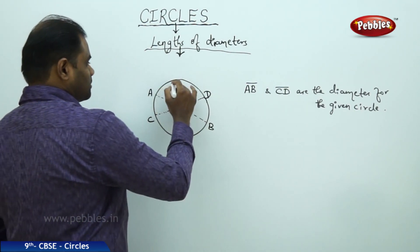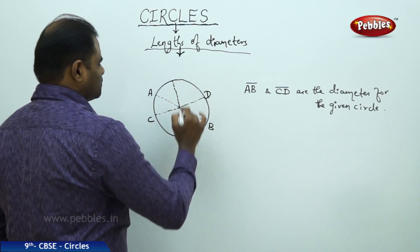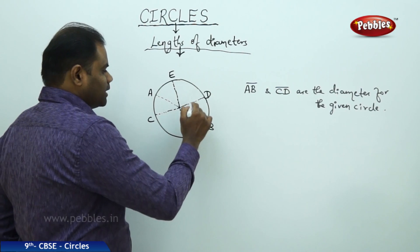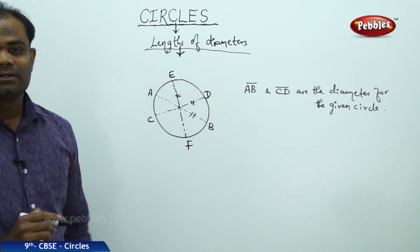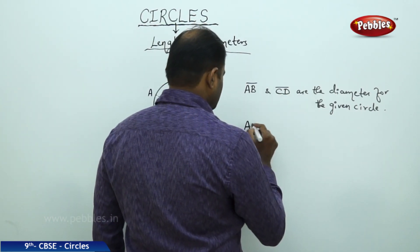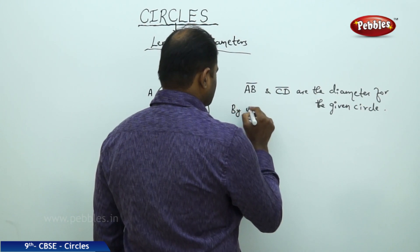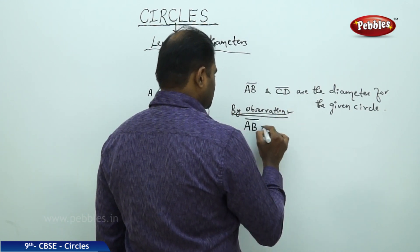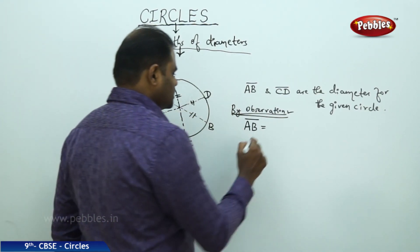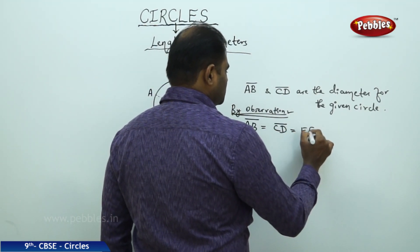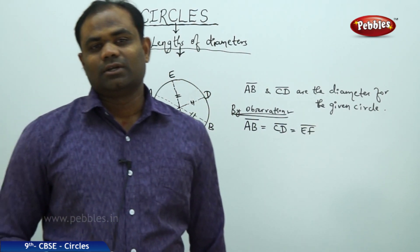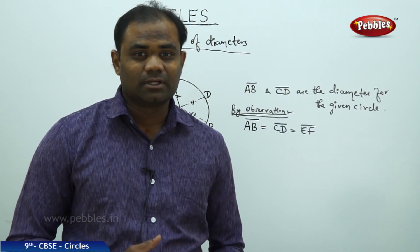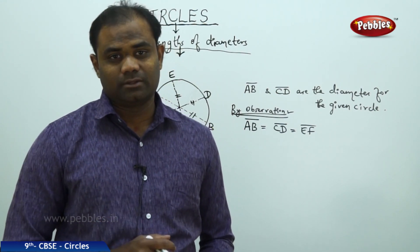Let us take another possible diameter at a different angle, which is EF, and measure this diameter also with the ruler. We see that all three lengths are equal. By observation, AB length equals CD length equals EF length, which shows that any diameter taken within the circle will have the same length. Therefore, the learning outcome here is that all diameters for the given circle must be of equal length.